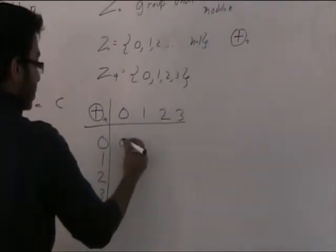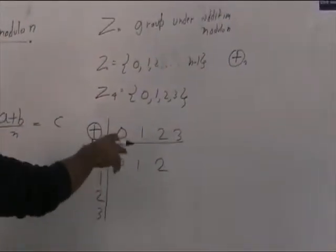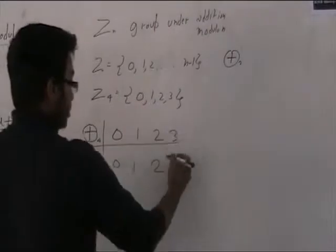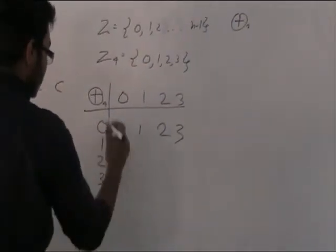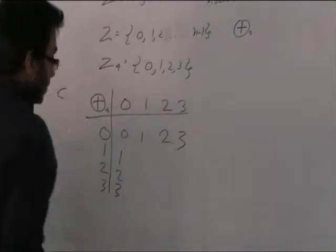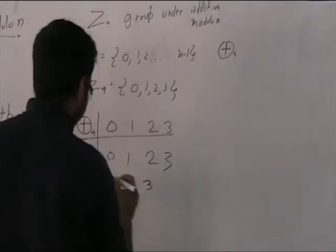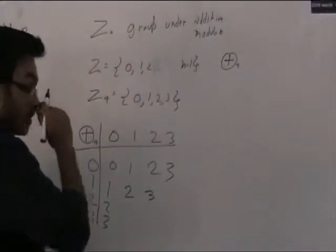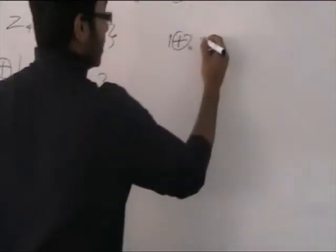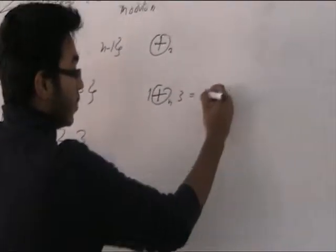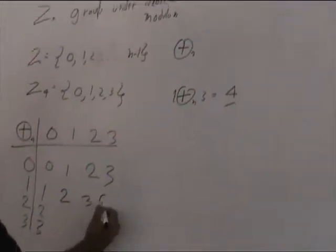So 0 plus 0 is 0, 0 plus 1 is 1, 0 plus 2 is 2 — which when divided by 4 leaves remainder 0 — actually 2. 0 plus 3 is 3. Again 1 plus 0 is 1, 2 plus 0 is 2, 3 plus 0 is 3. This is pretty basic. 1 plus 1 is 2, 1 plus 2 is 3. 1 plus 3 is 4 — now this is the interesting part.